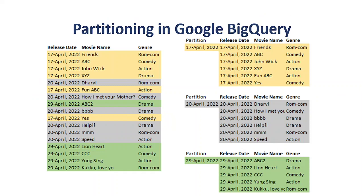First we'll start with partitioning. Table partitioning in BigQuery, or in any data application, is a method of breaking down a large table into small partitions or small tables. Looking at the picture, on the left side there is a big table with dummy data about movies — release date, movie name, and genre — and it is divided into three different partitions based on the release date. These partitions are stored separately at the physical level, accessed and managed independently. The column on which the table is partitioned is called the partition key; in this image, the release date is the partition key.